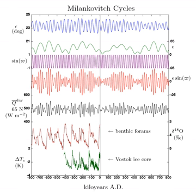Eccentricity varies primarily due to the gravitational pull of Jupiter and Saturn. However, the semi-major axis of the orbital ellipse remains unchanged. According to perturbation theory, which computes the evolution of the orbit, the semi-major axis is invariant.